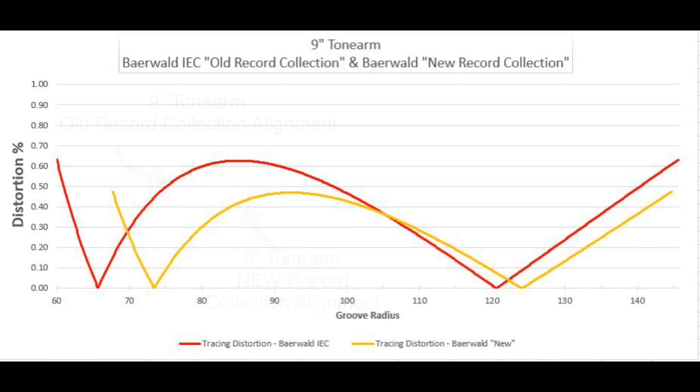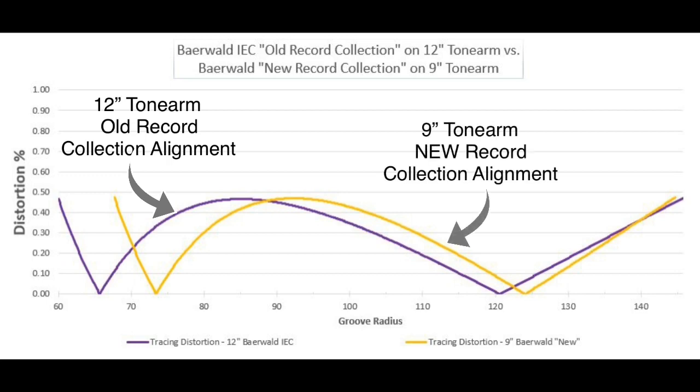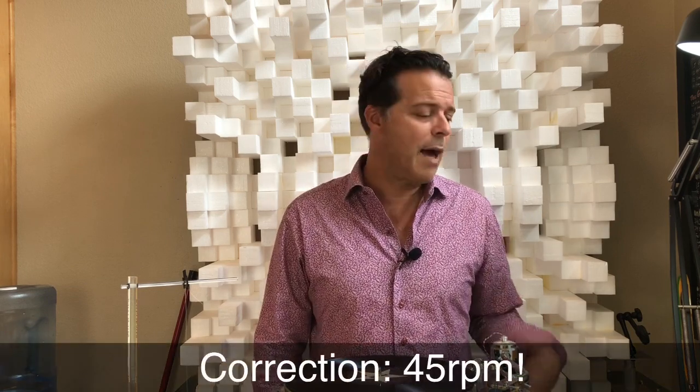It's as if we'd gone from a 9-inch tonearm to a 12-inch tonearm — the same level of distortion reduction, but without the extra expense, reduction in rigidity, and increased moment of inertia that longer tonearms have to contend with. In our data set, the percentage of records that have an innermost groove of less than 68 millimeters is in the single digits. So if your record collection is produced predominantly in 1990 or later, and especially if you have a predominance of 45 RPM audiophile pressings, you're likely to be happier with the playback quality using the Wally tractor's new record collection arcs.